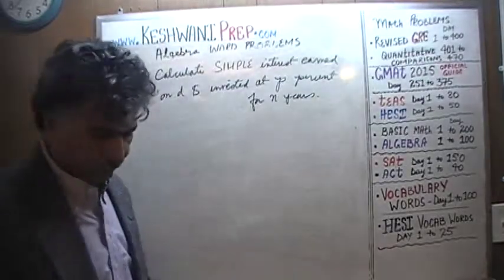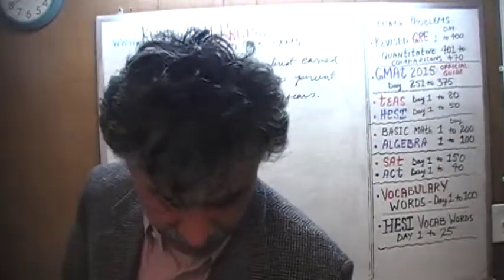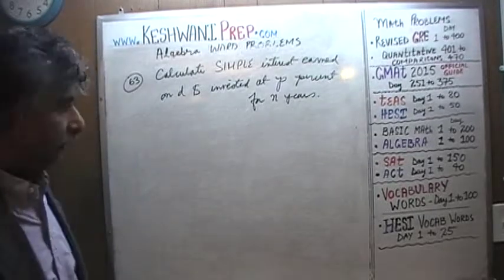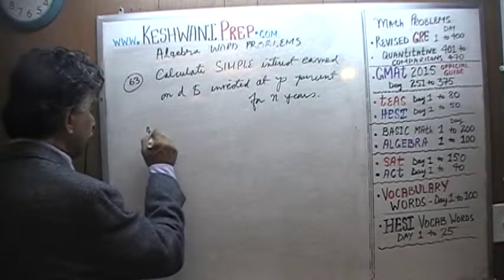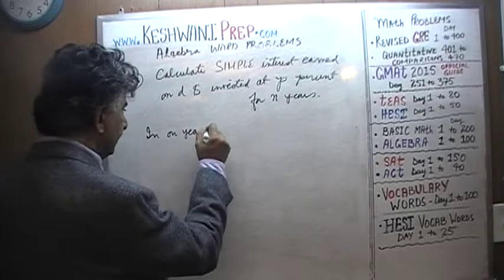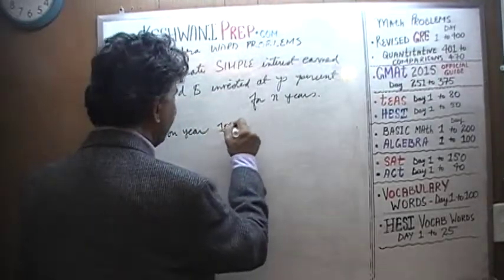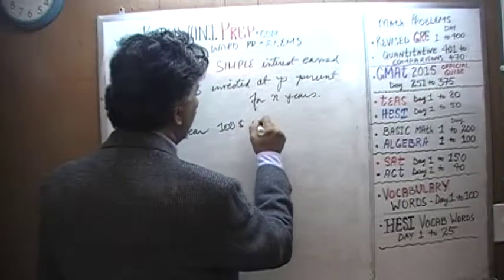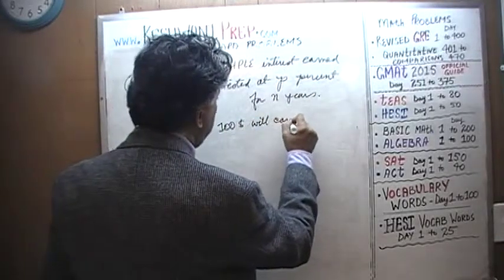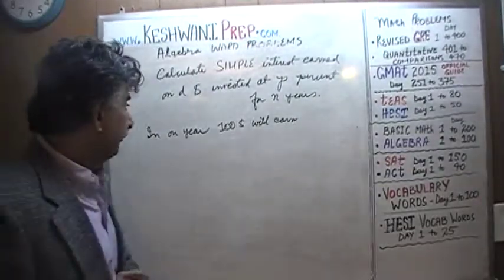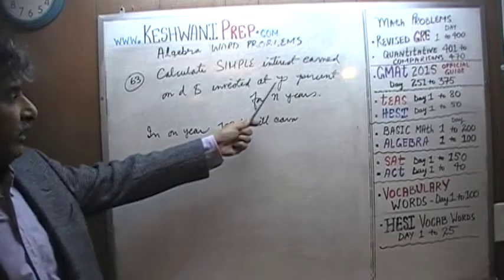Let's see what we can do. We are going to invest D dollars for a number of N years and it's going to pay us P percent per year, simple interest. Let's get going, shall we? Let's start with something simple. In one year, if you were to invest one hundred dollars, a hundred dollars will earn how much? Well, putting the value for P at P percent.